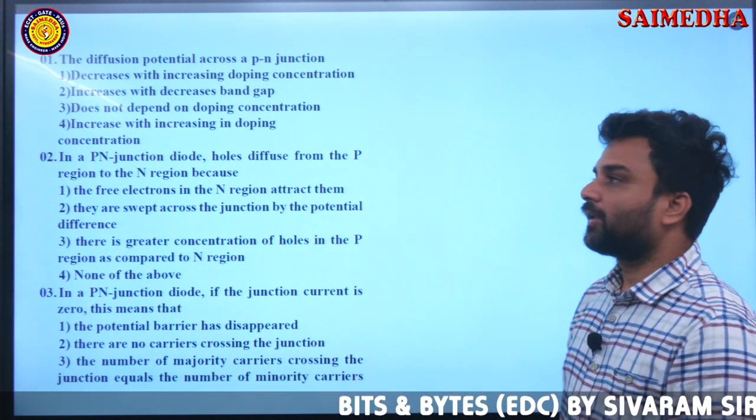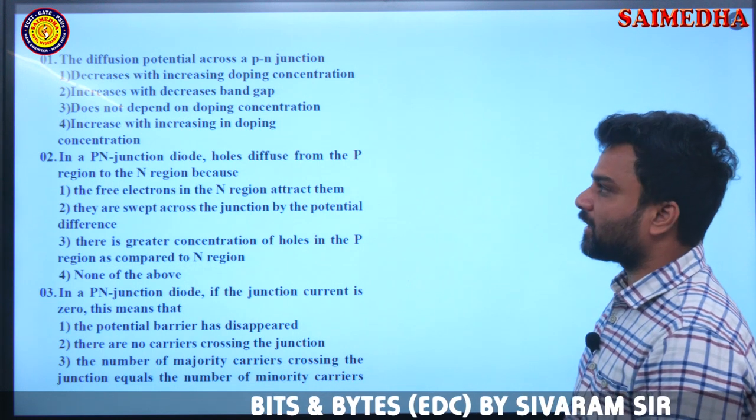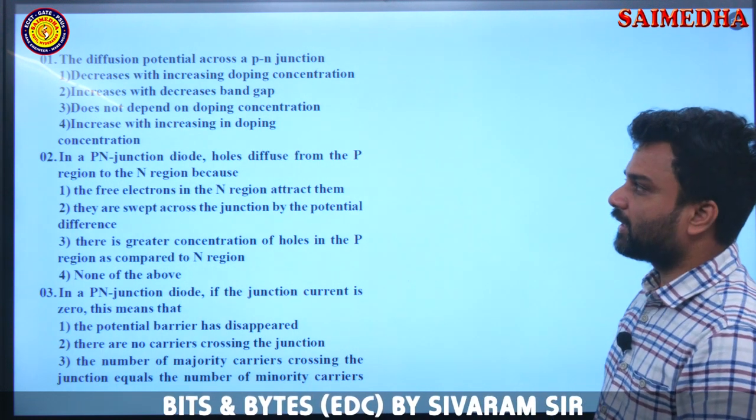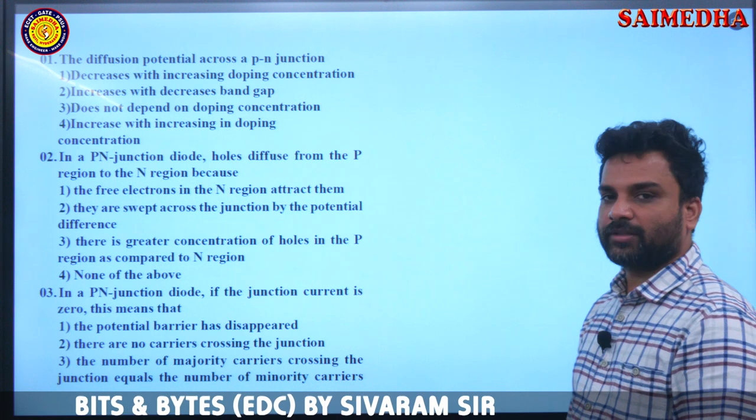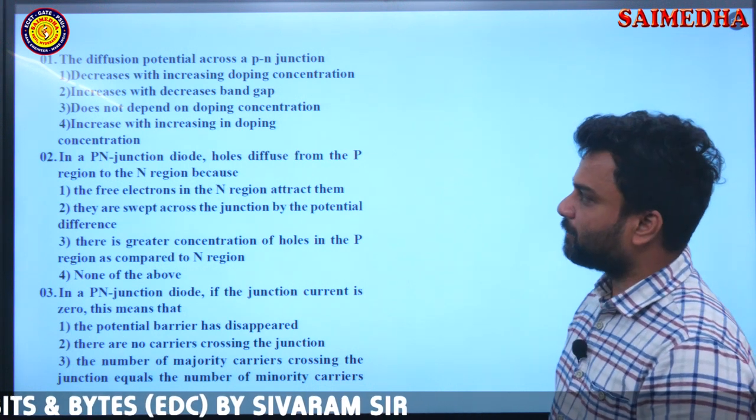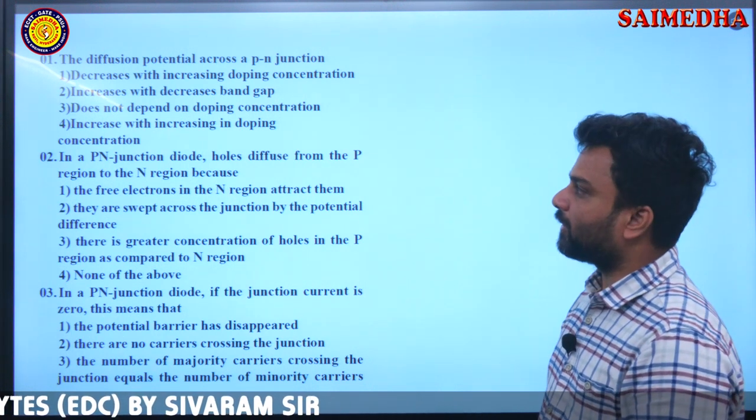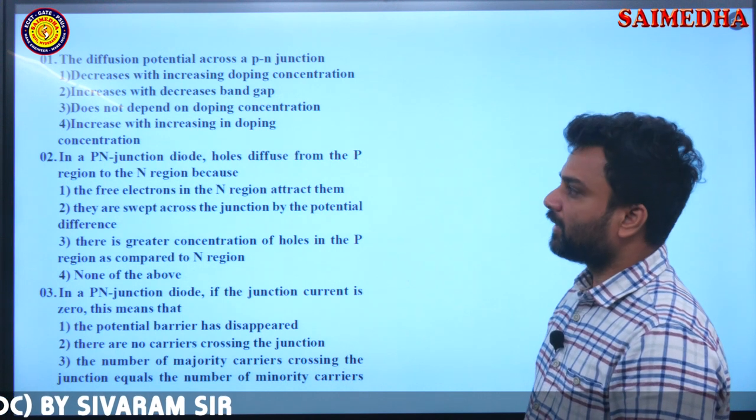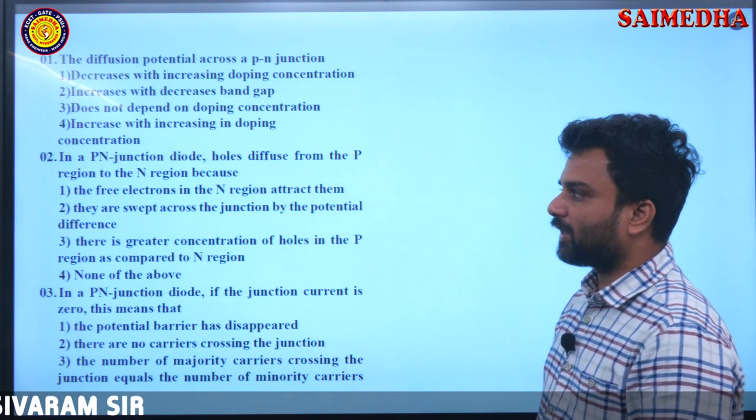First one, the diffusion potential across a P-N junction: decreases with increasing doping concentration, increases with decreased band gap, does not depend upon doping concentration, increases with increasing doping concentration.